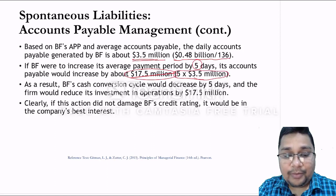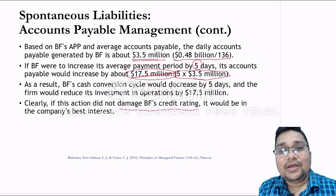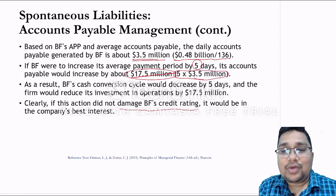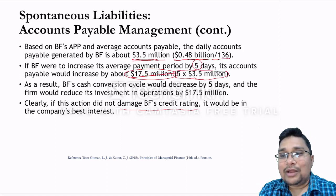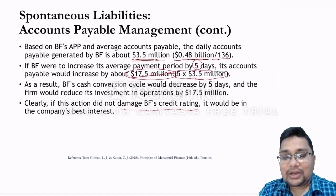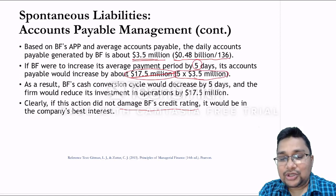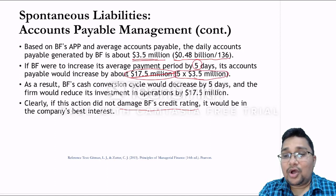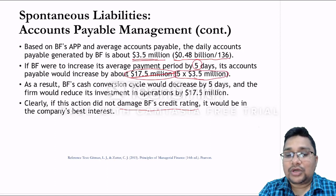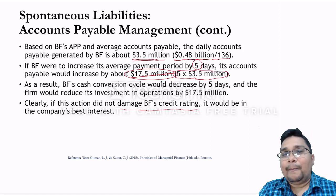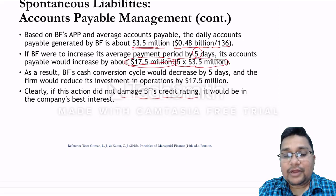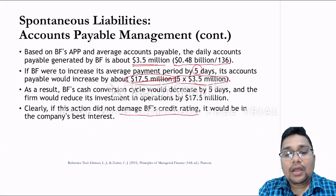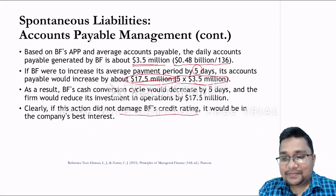Increasing the accounts payable period or average payment period will help your company, unless it damages your credit rating. You cannot directly calculate the impact on credibility in this way, but you should keep an eye on it. If you can ensure your credit rating is not being damaged, then increasing the average payment period will always help reduce total resources needed to complete operations for every cash conversion cycle.